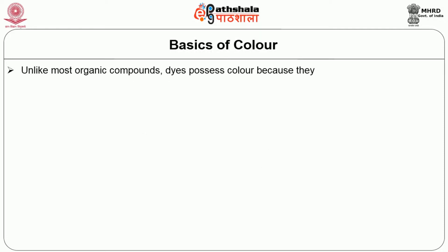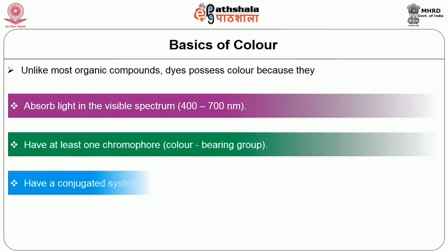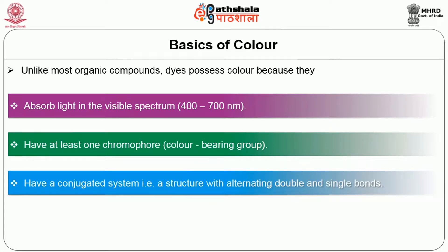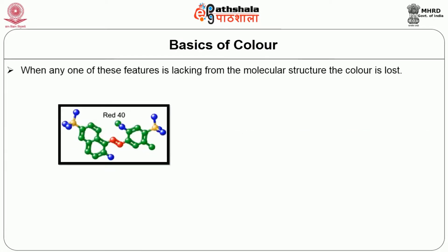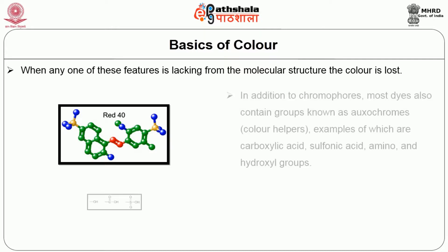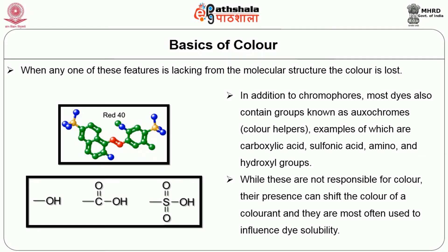Basics of color. Unlike most organic compounds, dyes possess color because they absorb light in the visible spectrum (400 to 700 nm), have at least one chromophore — color-bearing groups — have a conjugated system, that is a structure with alternating double and single bonds, and exhibit resonance of electrons, which is a stabilizing force in organic compounds. When any one of these features is lacking from the molecular structure, the color is lost. In addition to chromophores, most dyes also contain groups known as auxochromes, i.e., color helpers — examples of which are carboxylic acid, sulfonic acid, amino, and hydroxyl groups. While these are not responsible for color, their presence can shift the color of a colorant, and they are most often used to influence dye solubility.